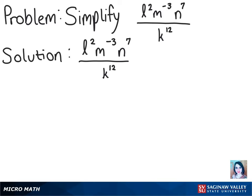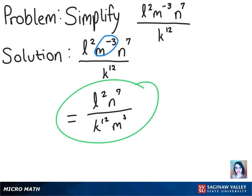So in this case, we can see that we have a negative exponent with the m, so all we have to do is switch it to the denominator, which will give us our final answer of l squared times n to the 7th over k to the 12th times m cubed. Thank you.